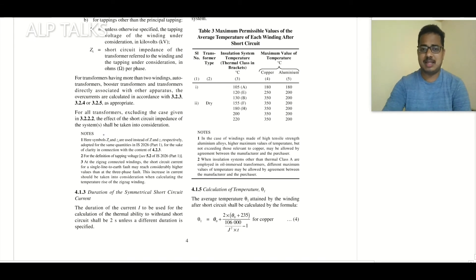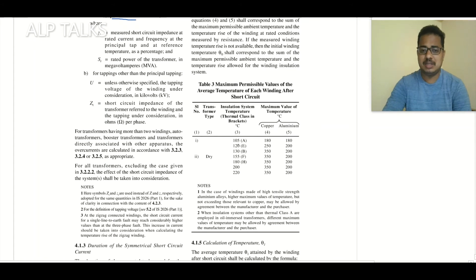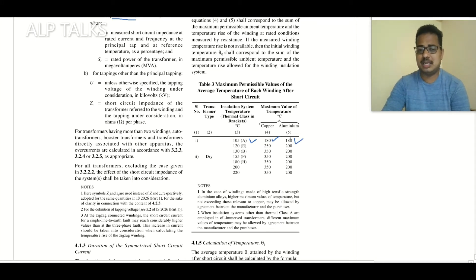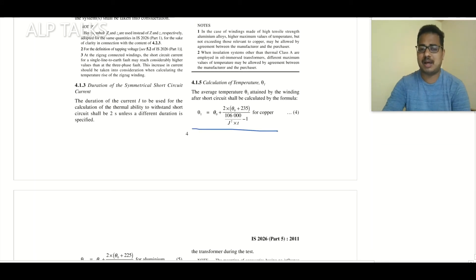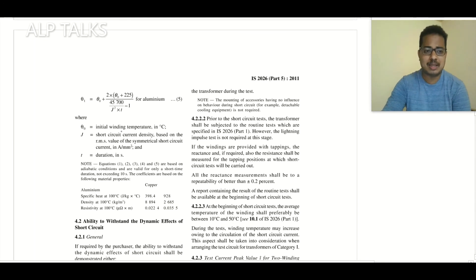Regarding thermal ability: when the transformer conductor insulation is Class A, the allowed temperature is 180°C as per IS 2026. Beyond 180°C we should not allow it. To check this, the formula given by the standard — similar to IEC — is: θ_naught + 2 × (θ_naught + 235) / 106 × 10^3 × j² × t − 1. This is for copper; a similar formula exists for aluminium.